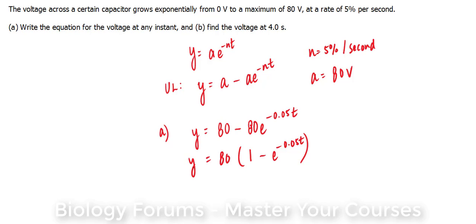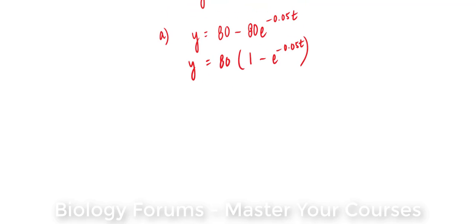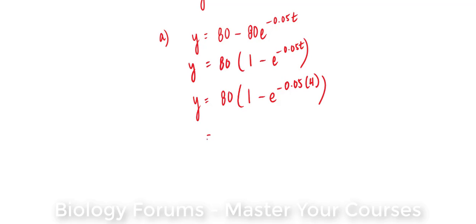So for part B, we will substitute 4 seconds into the formula and we end up with the following: y equals 80 times 1 minus e to the power of negative 0.05 times 4 seconds. We use our calculator to evaluate this.